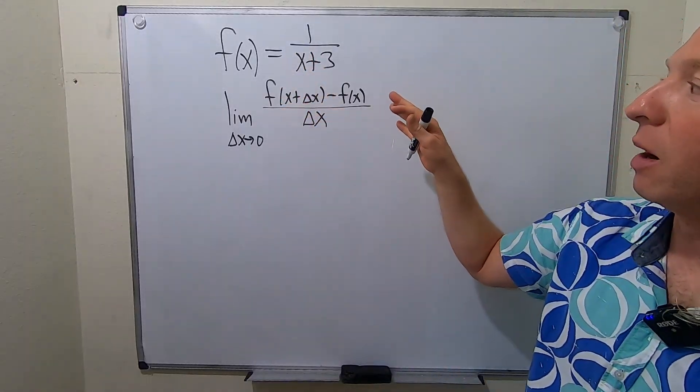For the second fraction, what's missing to get the LCD is x+delta x+3, so it's minus one times (x+delta x+3). Now distribute: we get x+3 minus x minus delta x minus 3, all over (x+delta x+3)(x+3), still divided by delta x. The x's cancel and the 3's cancel.